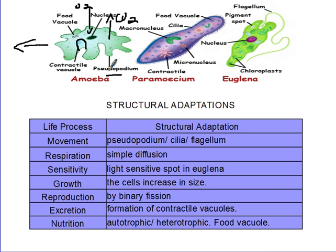For nutrition, unicellular organisms can be autotrophic or heterotrophic. The euglena is autotrophic — it can make its own food. For the paramecium and amoeba, they engulf food. When the amoeba meets food, it creates a pocket and the cytoplasm comes together around it, forming a food vacuole where enzymes are secreted to break down the food and release nutrients for respiration. The paramecium beats the water so food enters its body, and food vacuoles are created where enzymes act to release energy.